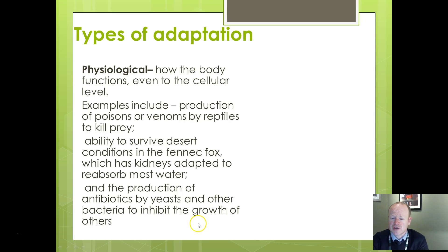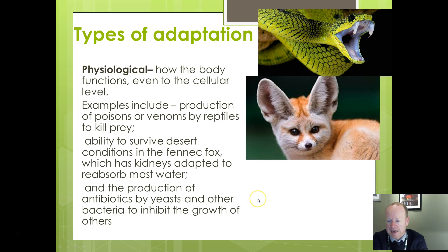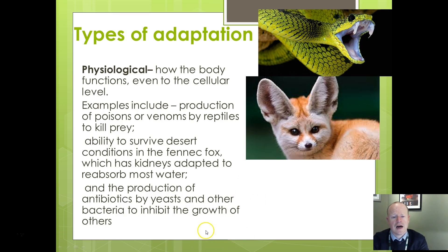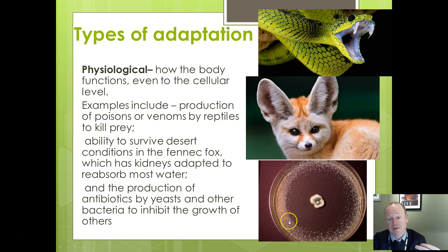Physiological adaptations relate to how something functions, even down to the cellular level, and may include biochemical adaptations. Poisons or venoms produced by reptiles to kill prey are a physiological adaptation. The fennec fox has characteristics that help it survive in the desert — for example, its kidneys can reabsorb nearly all of the water it takes in, so it doesn't produce much urine in hot, arid conditions. A classic example is also the penicillin mould, as popularised by Alexander Fleming — certain yeasts and bacteria produce antibiotics that inhibit the growth of other organisms around them, allowing them to take up nutrients.